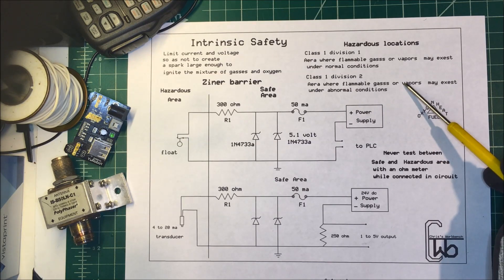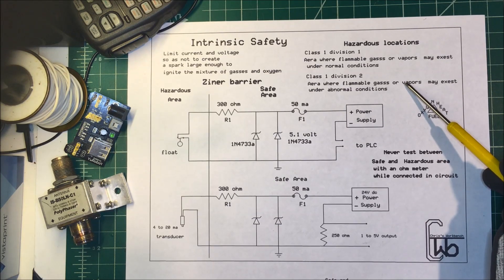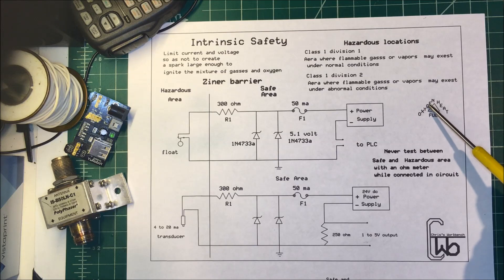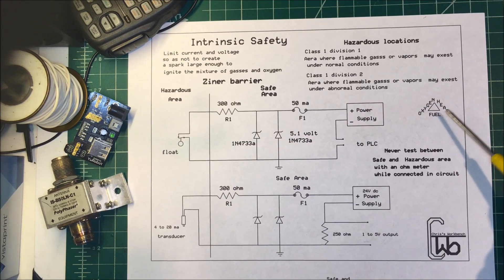This could be in a bilge of a boat or a sewer lift station. This is the fire triangle - you need oxygen, heat, and fuel. We can't control the amount of oxygen or fuel, but we can control the amount of heat that goes into that area.